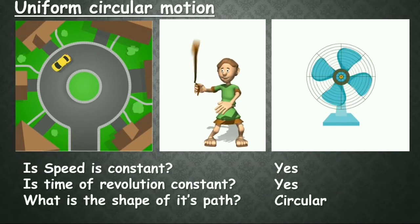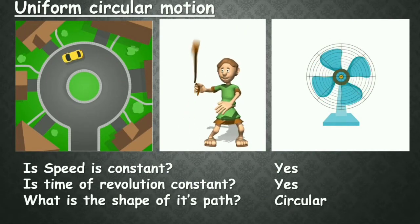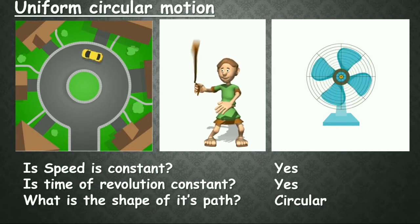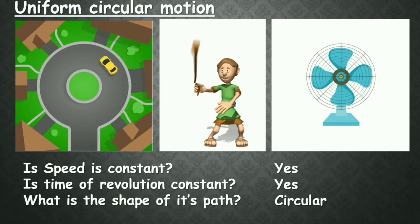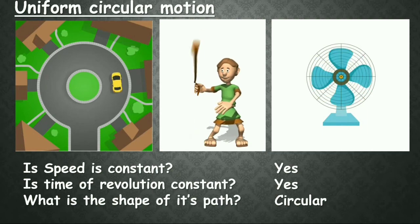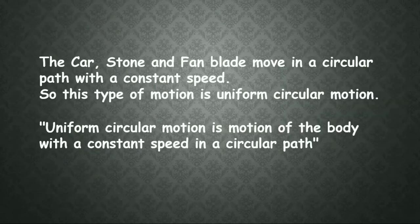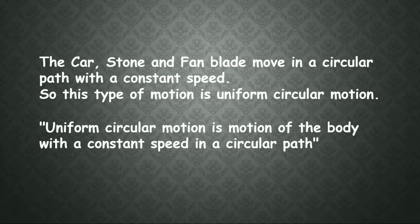Is speed constant in each and every case? Yes. Is the time of revolution constant? Yes. What is the shape of its path? Definitely the car, the stone, and the blade of the fan rotate in a circular path. So this type of motion is known as uniform circular motion. Uniform circular motion is the motion of a body with a constant speed in a circular path.